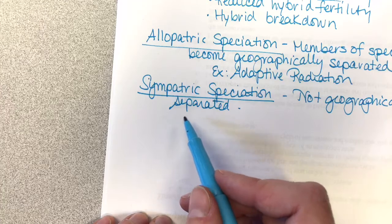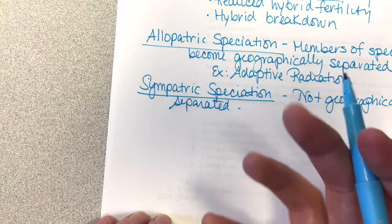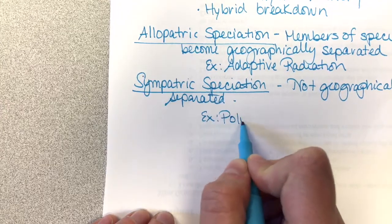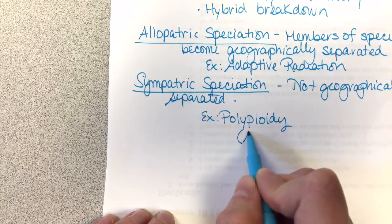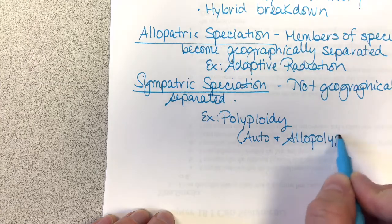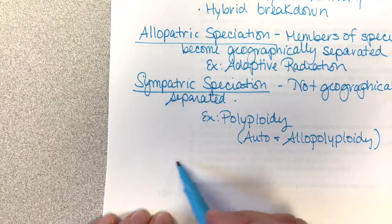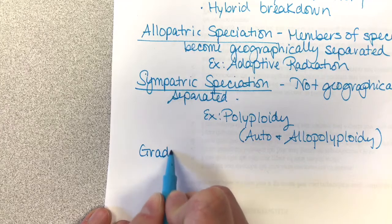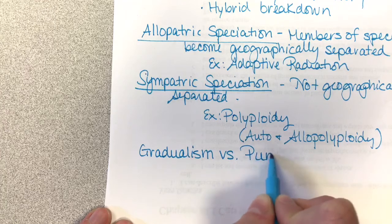Sympatric speciation can occur in plants. We talked about the different types of polyploidy — I went through in our notes an example of autopolyploidy and allopolyploidy. The organisms are not geographically separated. Then we looked at gradualism versus punctuated equilibrium.